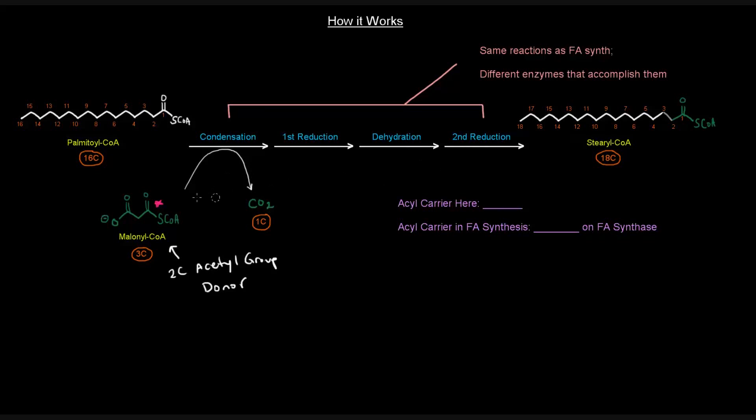So, but what happens here is that we're essentially just lengthening this chain. So one key difference is that we have different enzymes. Another difference is that in this here, the acyl carrier is this coenzyme A here. So we have coenzyme A. But the acyl carrier in fatty acid synthesis was the acyl carrier protein, the ACP, on the fatty acid synthase complex. So that's another difference.